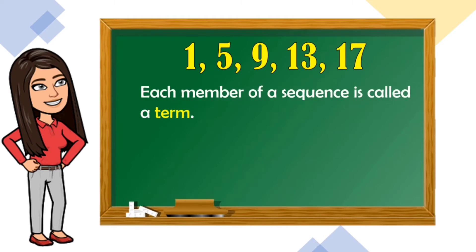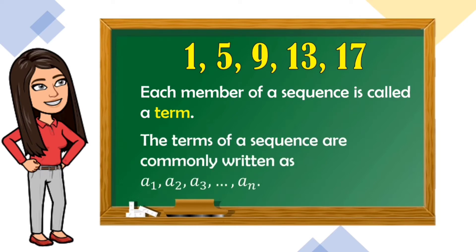Each member of a sequence is called a term. In this example, there are 5 terms: 1, 5, 9, 13, and 17. The terms of a sequence are commonly written as a sub 1, a sub 2, a sub 3, up to a sub n.